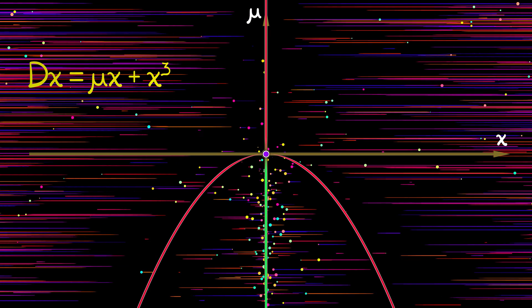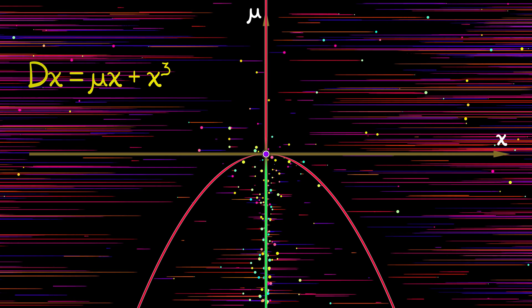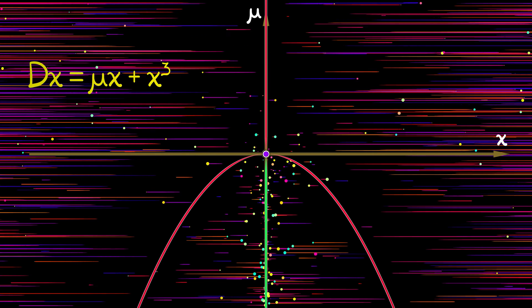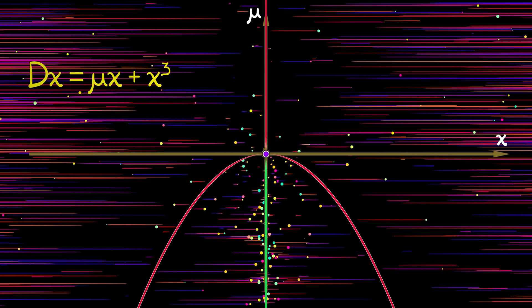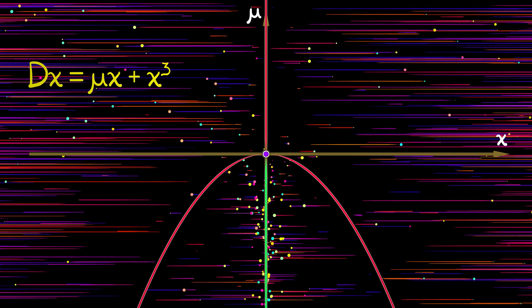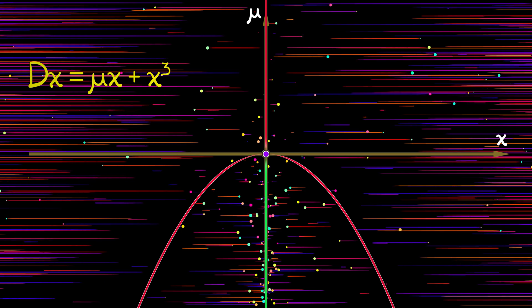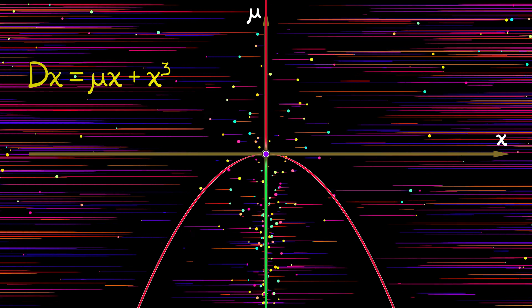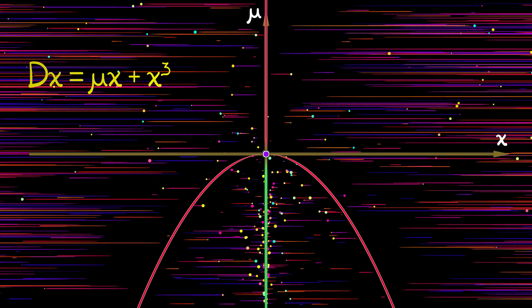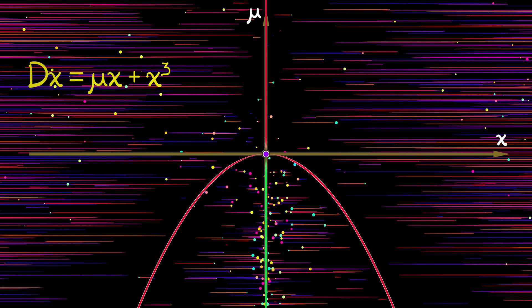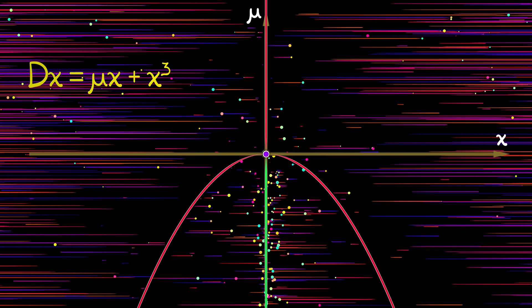Instead of a preponderance of stable equilibria, we have unstable equilibria all over the place. What do we have? We have a single unstable equilibrium that converts to a stable equilibrium and sheds a pair of unstable equilibria off to the side. That has totally different behavior.